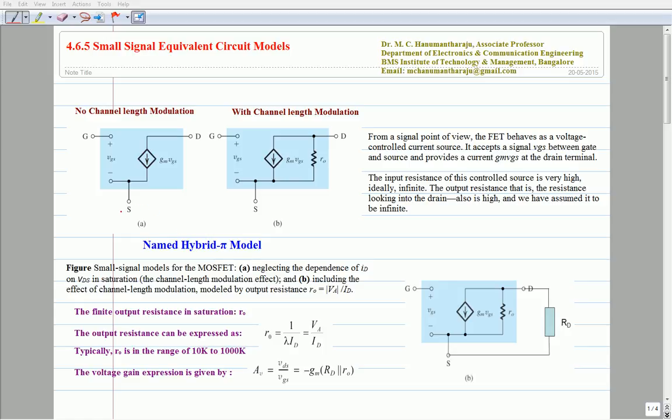The first model seems to be the simplest model since we have replaced gate and source with an open circuit and the drain and source with a current source.